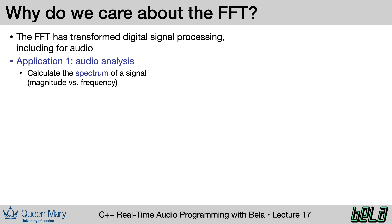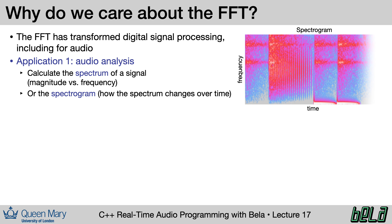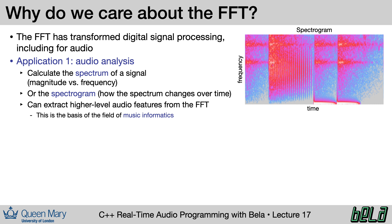The fast Fourier transform has absolutely transformed the realm of digital signal processing, not only for audio. In the case of audio, we see two broad categories of applications. The first is audio analysis: in the simplest case we can calculate a spectrum, which is a localized snapshot of the signal's frequency content, and we can also plot a spectrogram showing how frequency content evolves over time. From there, we can calculate higher-level features and potentially plug them into machine learning algorithms — the whole domain known as music information retrieval, which has really changed the face of the music industry over the past decade.